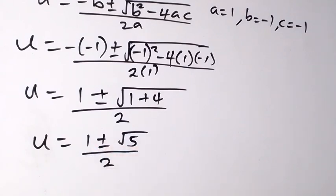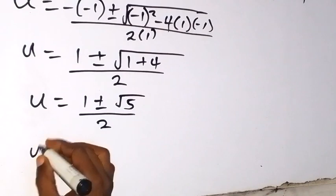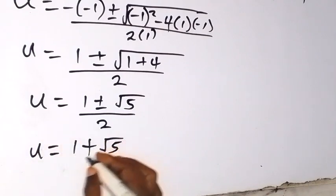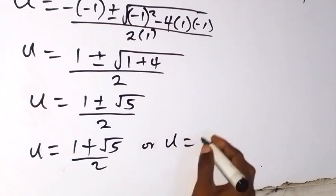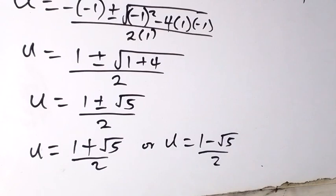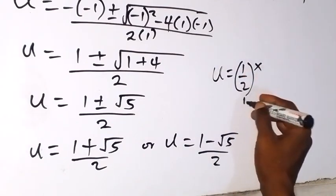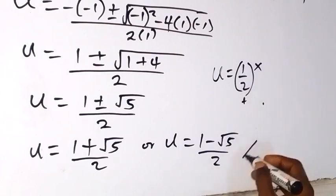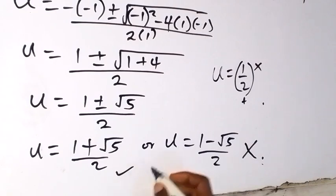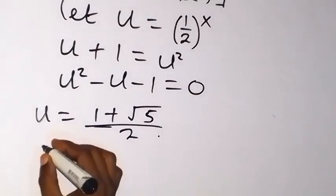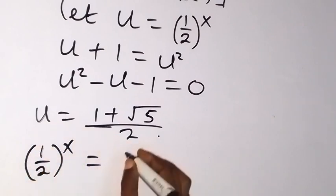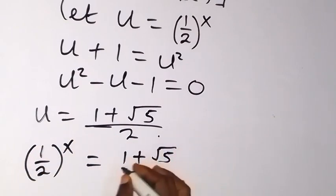We have two solutions: u equals 1 plus root 5 over 2, or u equals 1 minus root 5 over 2. Since our u is represented as 1 over 2 raised to power x, this number is expected to be positive. The second solution is negative, so it will not be a valid solution. We work with u equals 1 plus root 5 over 2, meaning 1 over 2 raised to power x equals 1 plus root 5 over 2.